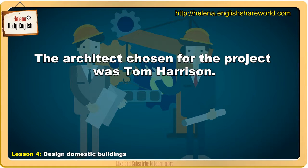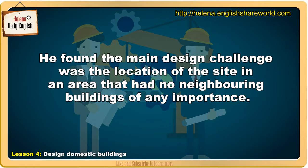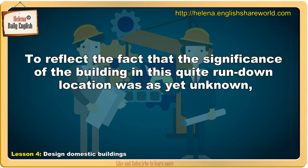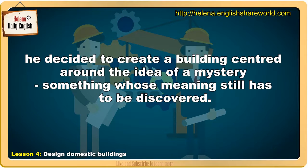The architect chosen for the project was Tom Harrison. He found the main design challenge was the location of the site in an area that had no neighbouring buildings of any importance. To reflect the fact that the significance of the building in this quite run-down location was as yet unknown, he decided to create a building centred around the idea of a mystery — something whose meaning still has to be discovered.